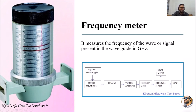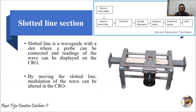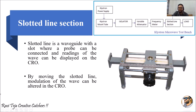Next comes the slotted line section, which takes the signal from the waveguide. It looks like a scale or vernier caliper attached to a waveguide, with a knob used for moving the slotted line to and fro. It is essentially a scale reading attached to a waveguide. A coupling probe or wire-type mechanism with a probe connection can be attached to the slotted line, and readings of the wave in the waveguide can be measured using a VSWR meter or CRO.